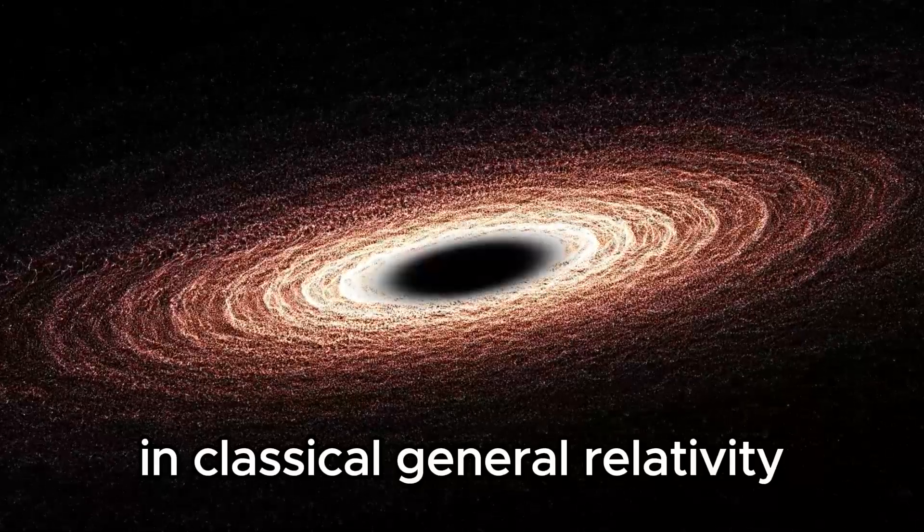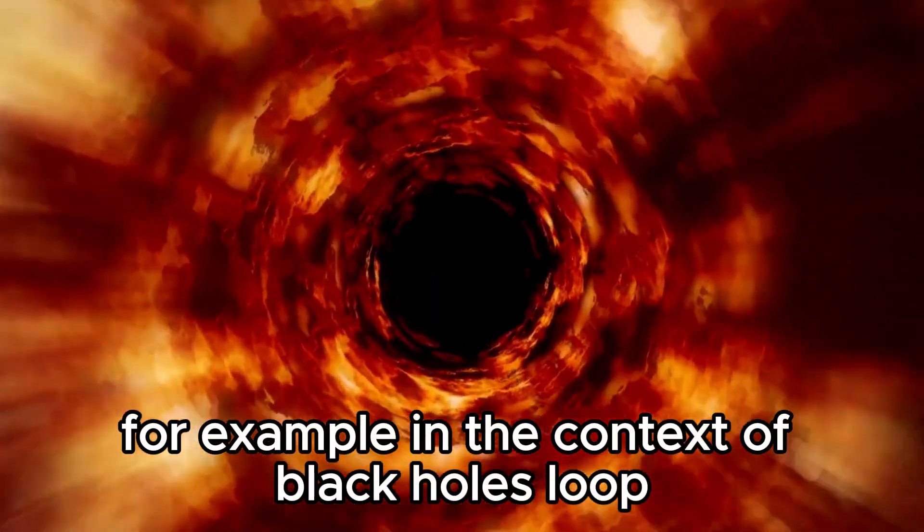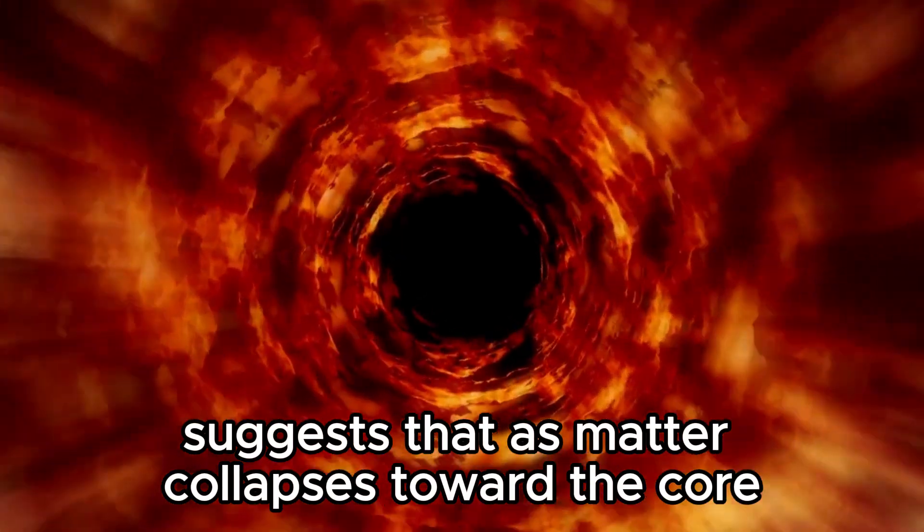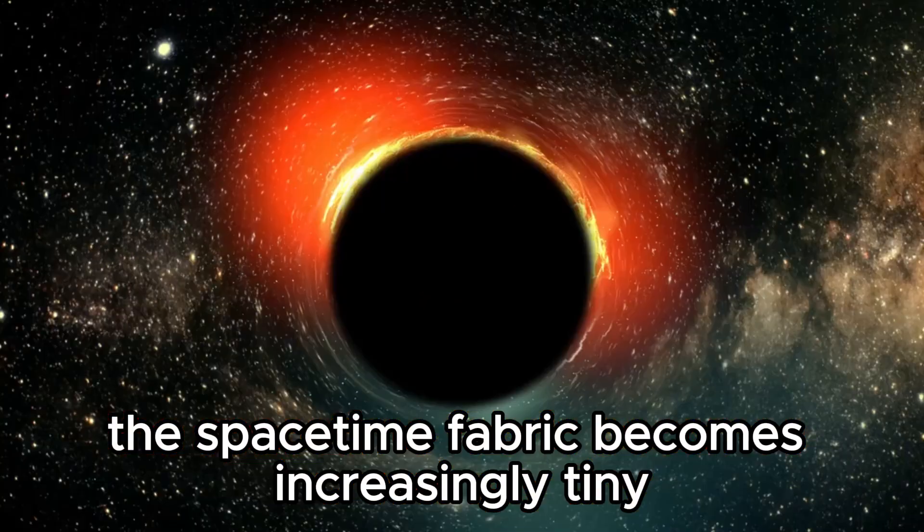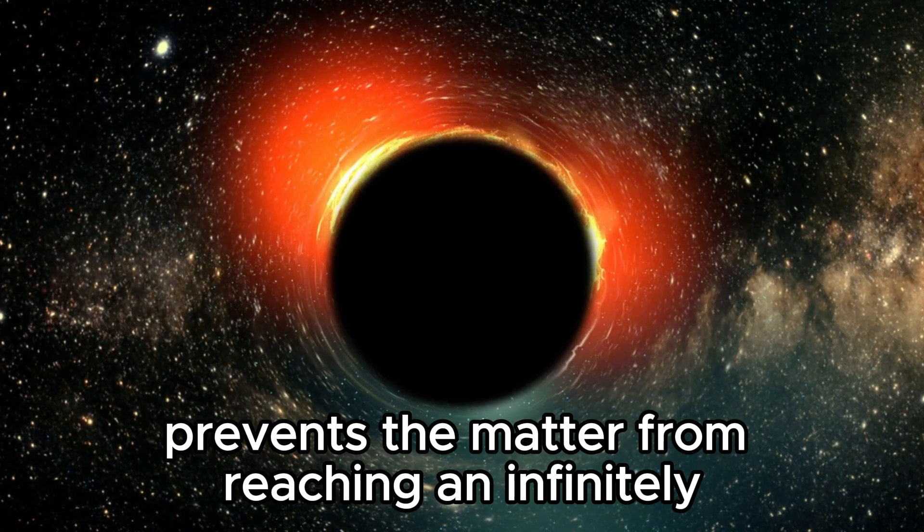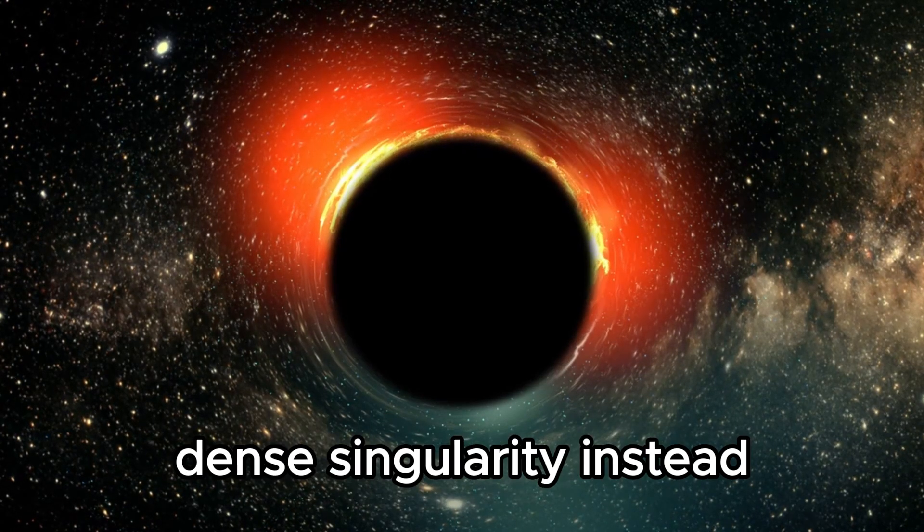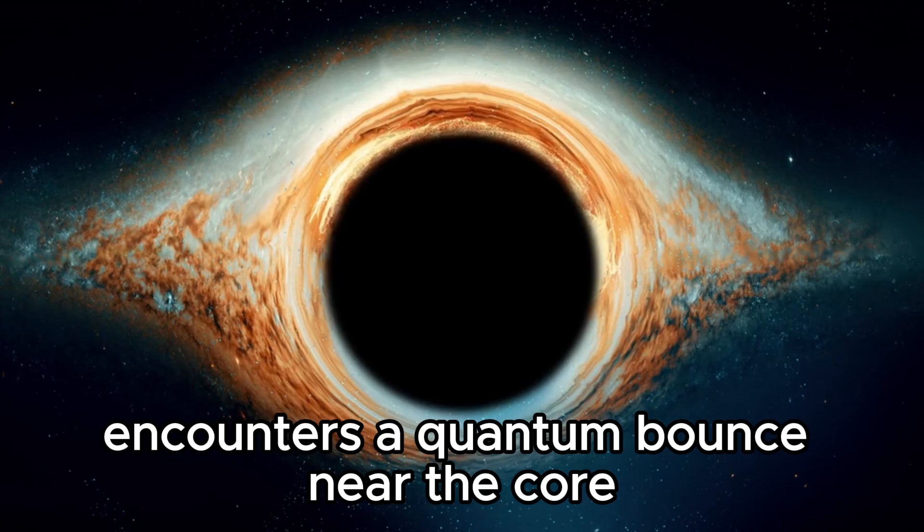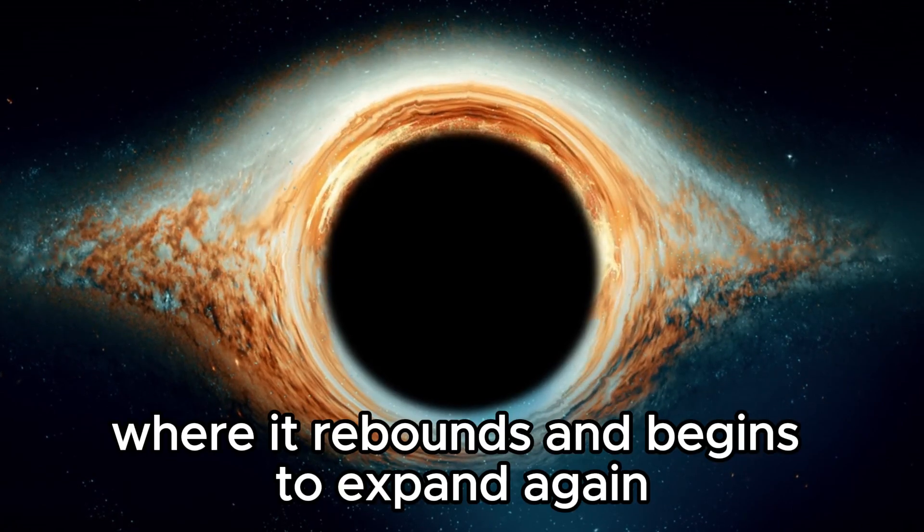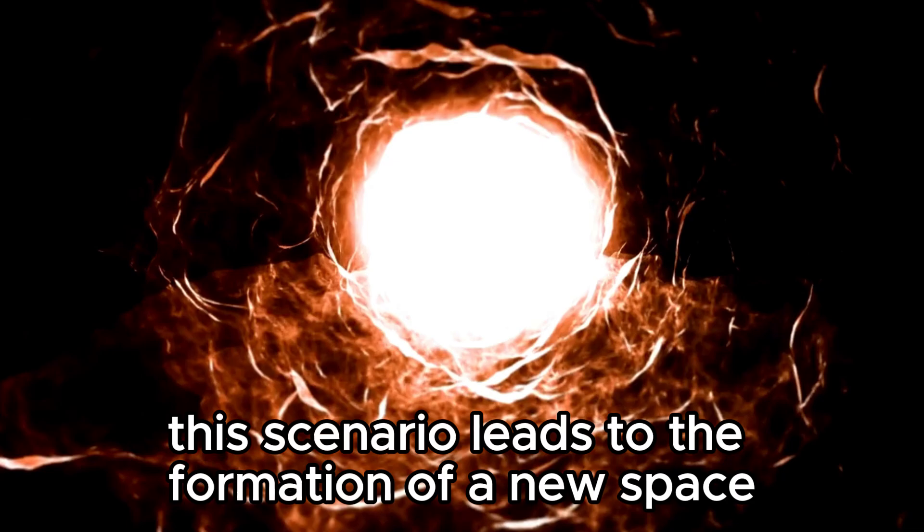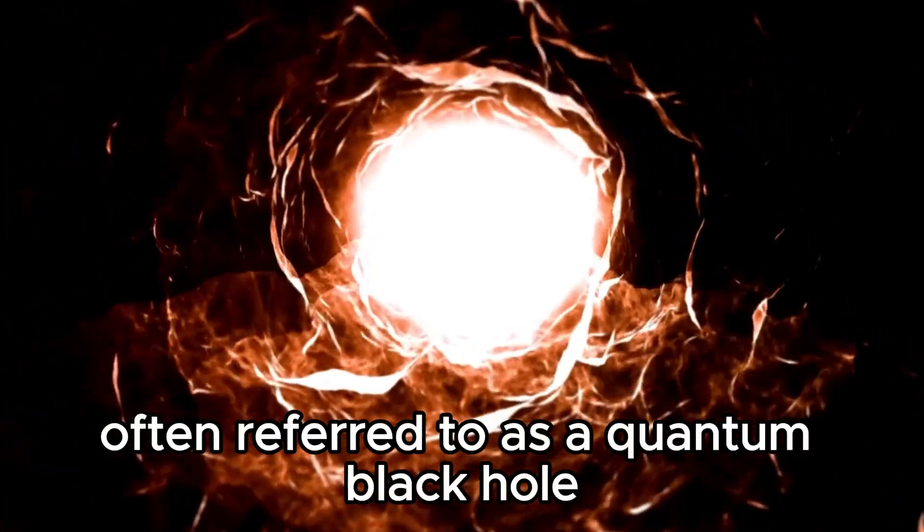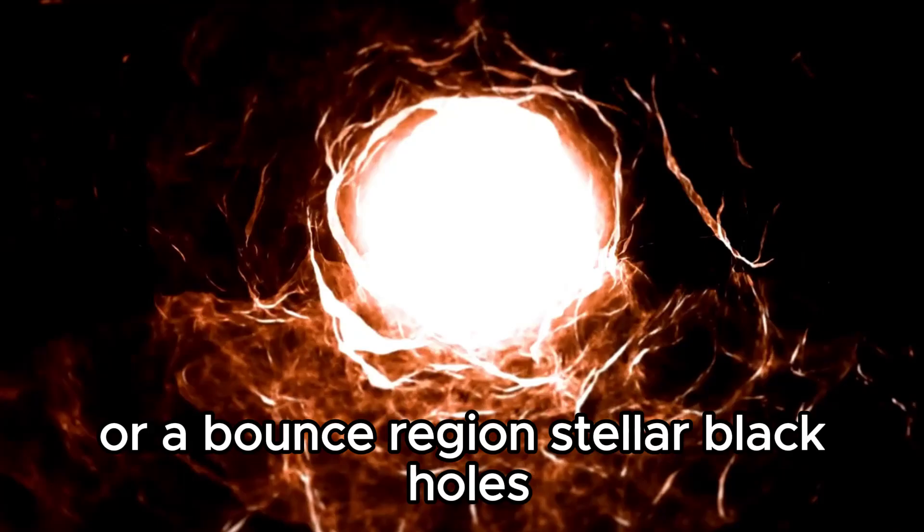In classical general relativity, for example in the context of black holes, loop quantum gravity suggests that as matter collapses toward the core, the space-time fabric becomes increasingly tiny. This size prevents the matter from reaching an infinitely dense singularity. Instead, the collapsing matter encounters a quantum bounce near the core, where it rebounds and begins to expand again. This scenario leads to the formation of a new space-time region inside the black hole, often referred to as a quantum black hole or a bounce region.